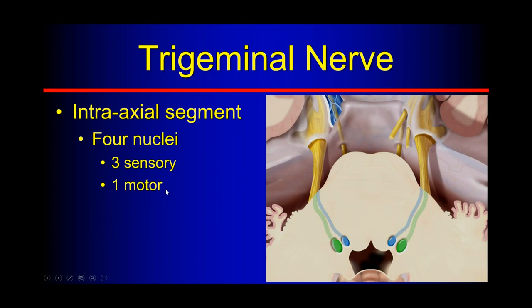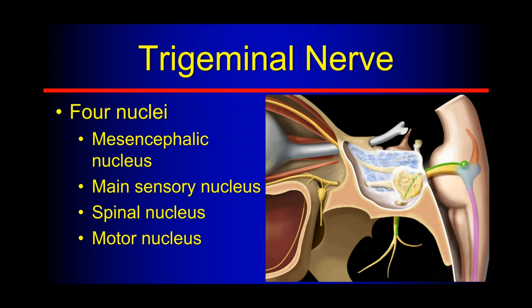We have three sensory and one motor nucleus. Those motor fibers all go to the muscles of mastication. Anytime we have an isolated cranial nerve deficit, we want to image from the origin nucleus all the way out through the end organ. We can think about central cranial nuclei five through eight having their nuclei within the pons, one through four being above in the midbrain or mesencephalon, and nine through twelve being below in the medulla.